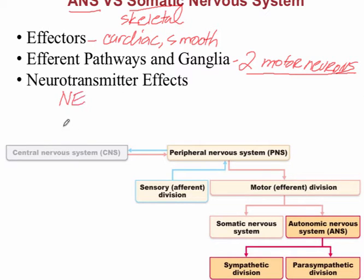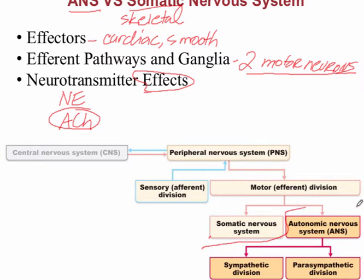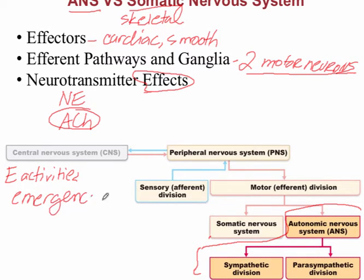There are tables showing specific neurotransmitter effects — for example, what norepinephrine and acetylcholine each do to the bronchioles. The autonomic nervous system has two distinct divisions. The sympathetic nervous system handles all the 'E' activities: emergency, embarrassment (when blood flow rushes to the cheeks), exercise, and excitement.